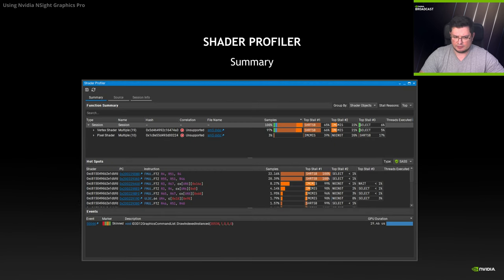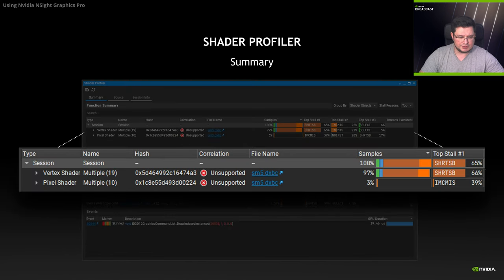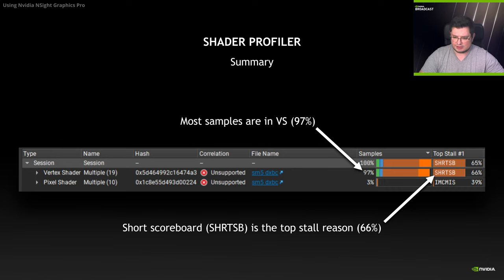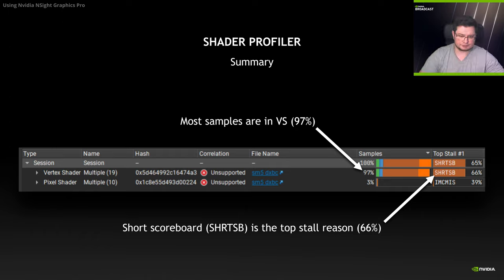Once shader profiling information is gathered, you will see something like this. As you can see, there is a vertex shader and a pixel shader, where 97% of all samples reside inside the vertex shader. Also, 66% of the top stall number 1 is short scoreboard. If you recall from the analysis description, short scoreboard is caused by IDC requests active — so this is exactly the shader we are looking for.